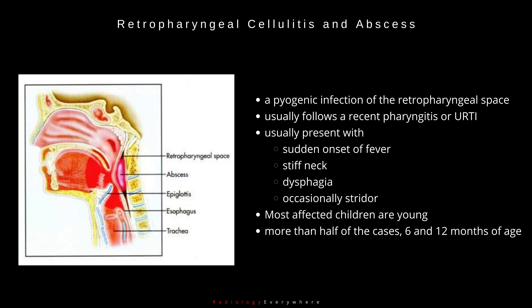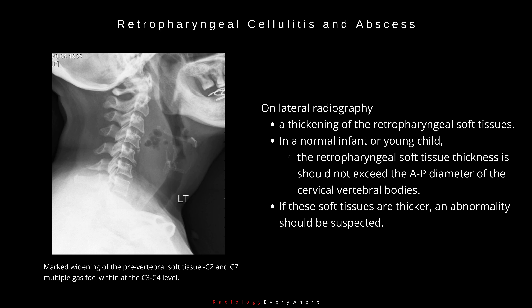Retropharyngeal cellulitis and abscess is a pyogenic infection of the retropharyngeal space that usually follows a recent pharyngitis or upper respiratory tract infection. Children are usually present with sudden onset of fever, stiff neck, dysphagia, and occasionally stridor. Most affected children are young, with more than half of the cases occurring between 6 and 12 months of age. On lateral radiography, there is thickening of the retropharyngeal soft tissues, which in a normal infant or young child should not exceed the anterior-to-posterior diameter of the cervical vertebral bodies.